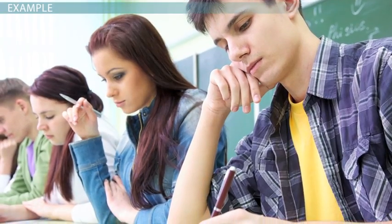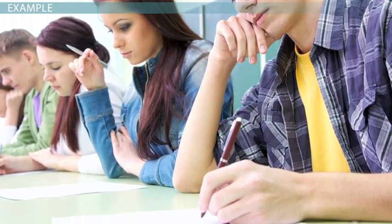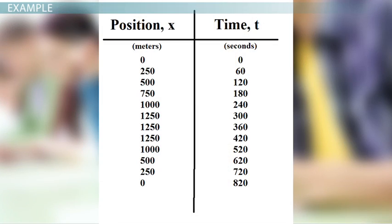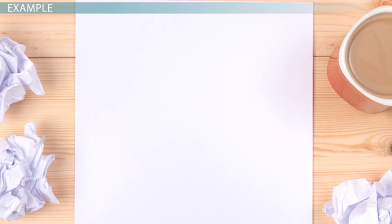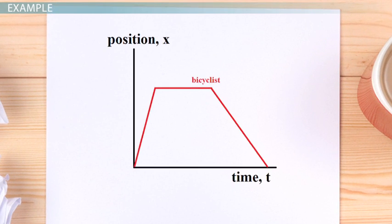You need to be able to plot a position-time graph from data. For example, you might get data showing how a bicyclist changed position over the course of a day, going to work and then back home again. Pause the video and try plotting a graph of this data. The graph should show the bicyclist going to work at a constant velocity, staying at the same position for a while because he was at work, and then cycling home. You might even notice that he cycled to work faster than he cycled home — maybe he was late.